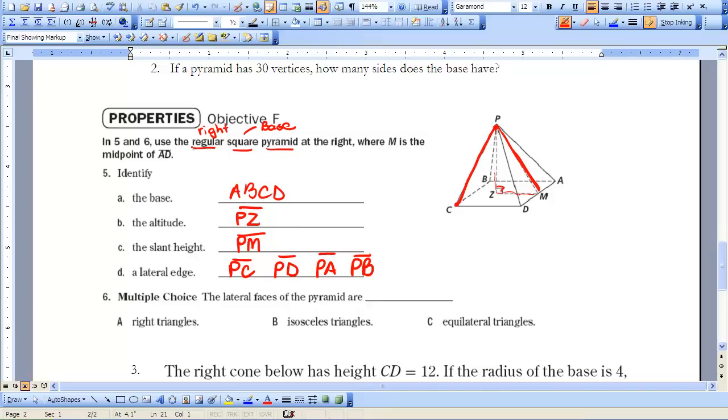It says the lateral faces of the pyramid are right triangles, isosceles triangles, or equilateral triangles. Because we know the base is regular and it's right, then we know that these triangles are all going to be the same, so these are going to be isosceles triangles.